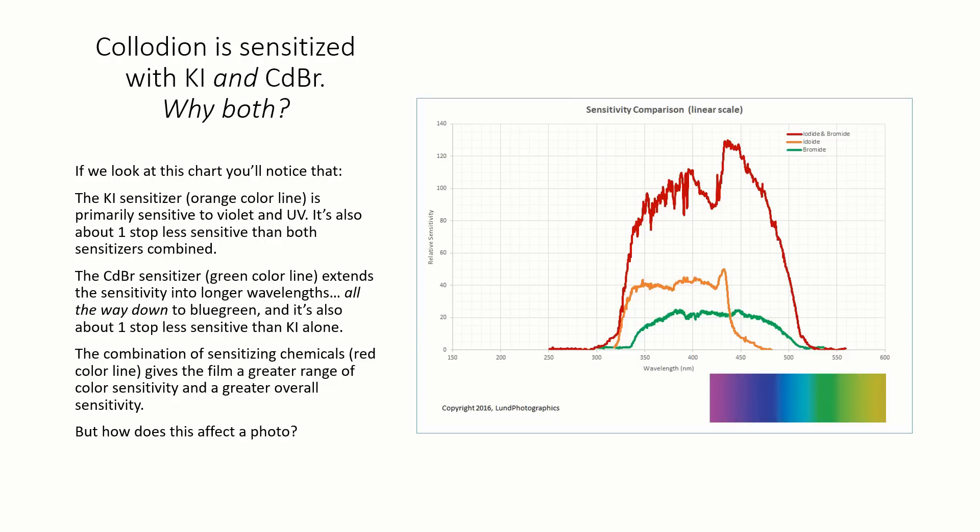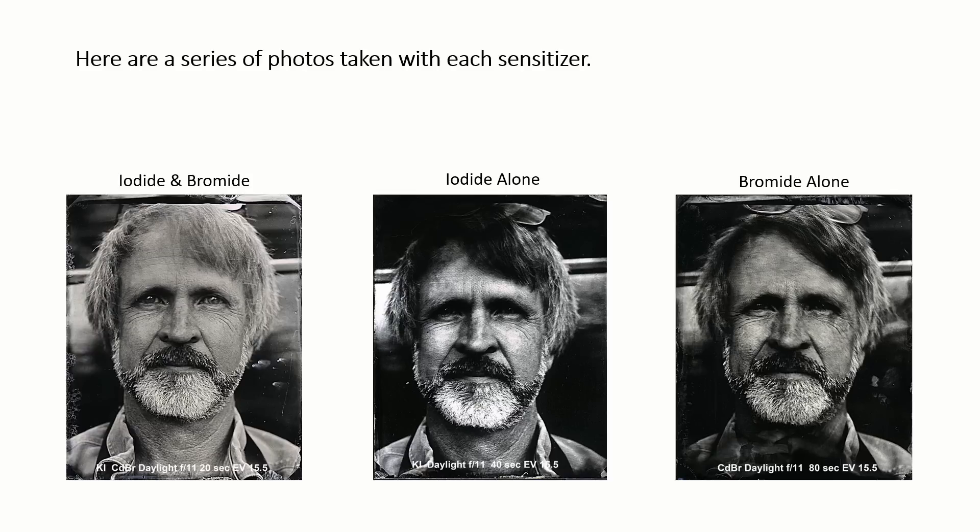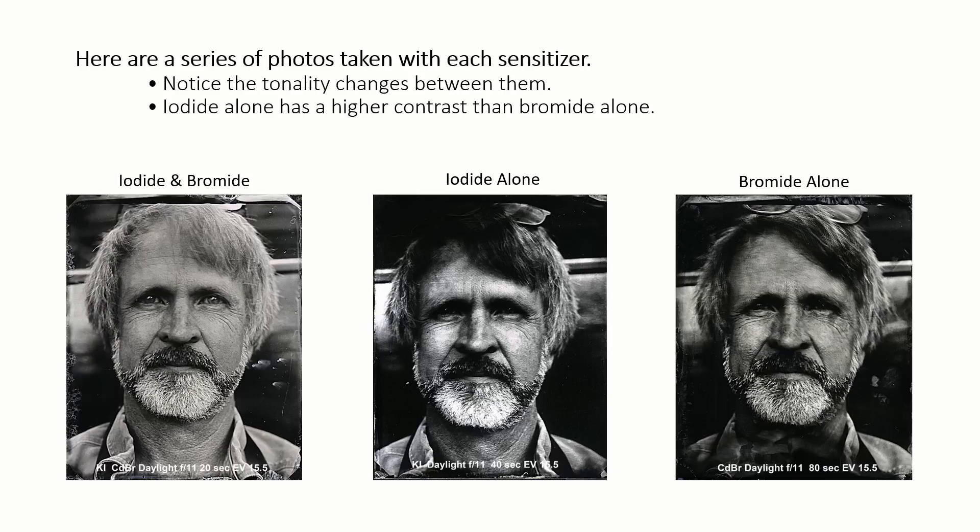Charts and graphs are fine, but how does it affect an image? Here are three images, each shot in open shade, but using a different sensitizer. Notice the difference in tonality. The iodide appears more contrasty than bromide alone, but also notice the exposure times for each print.